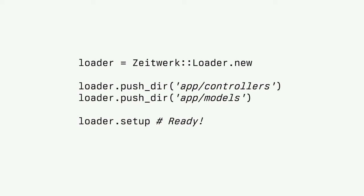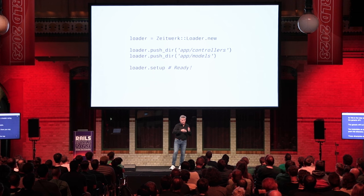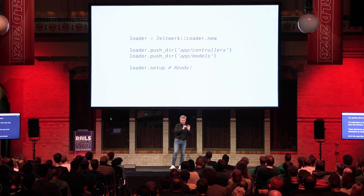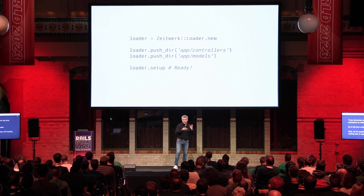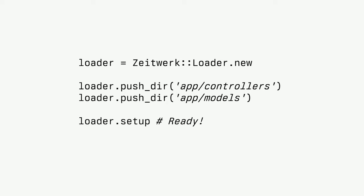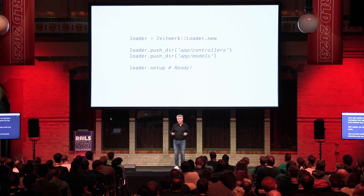This is the way you create a loader using the generic API: you instantiate an object, then call push_dir with the directories that represent the top-level namespace by default. Here we push app/controllers and app/models — just two root directories. That tells Zeitwerk to track those directories as representing the top-level namespace. Once configured, you call setup, and in the next line you can use anything in your project. There's nothing else to do.